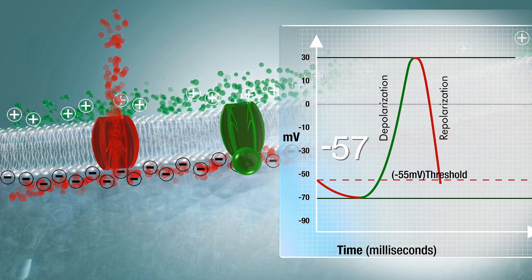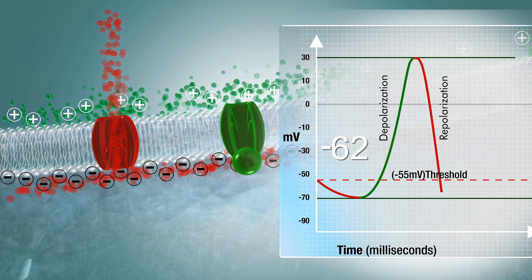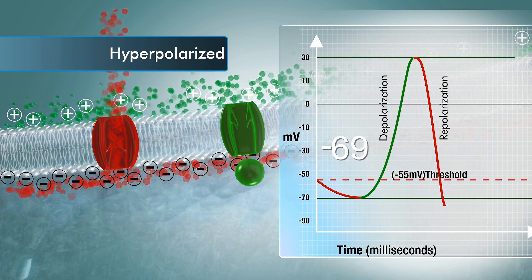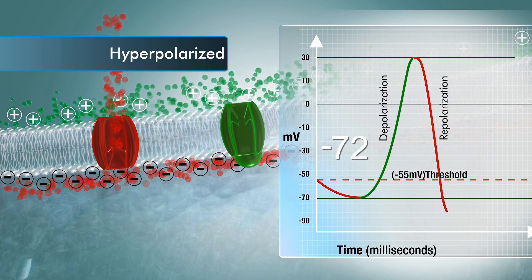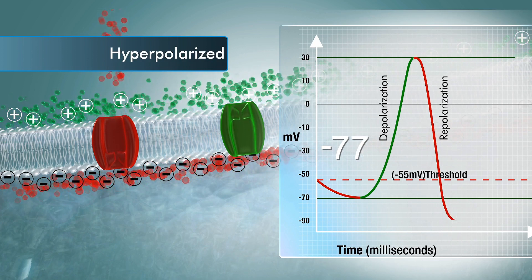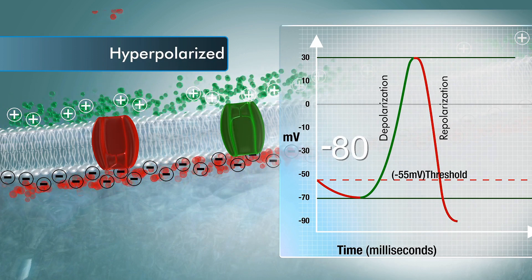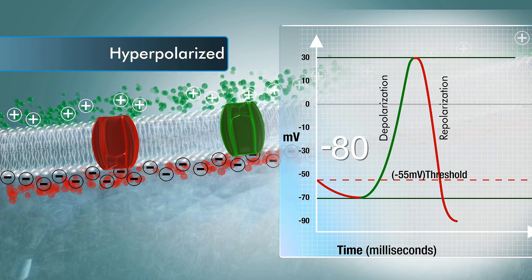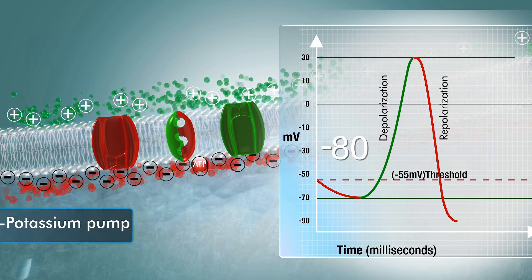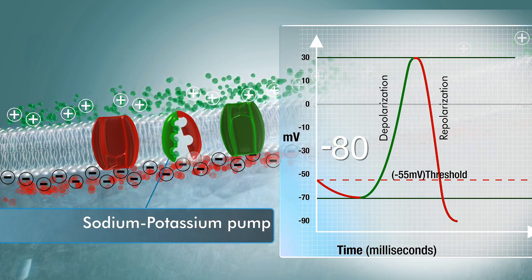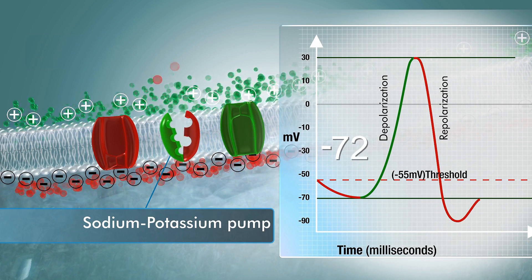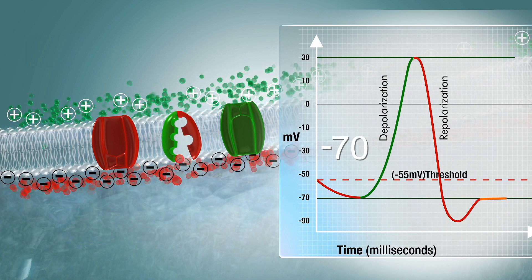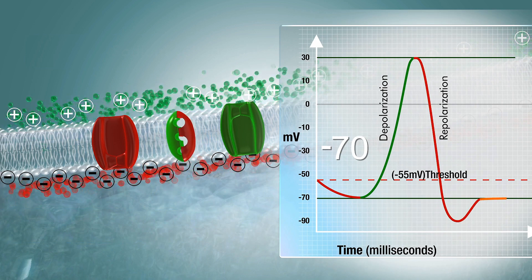Once enough potassium has diffused out of the cell to cause the inside of the membrane to be below threshold, the inactivation gate of the sodium channel opens as the gates on both types of ion channels close, but not before the inside of the membrane becomes less than the resting potential of minus 70 millivolts, causing the inside to become hyperpolarized. Sodium-potassium pumps transport sodium ions out of the cell and potassium ions into the cell to restore ion concentrations and, along with leak channels, re-establish the resting membrane potential.